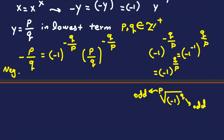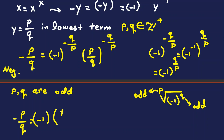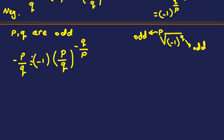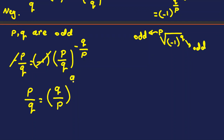So both p and q are odd. With q odd, (−1)^q = −1, making (−1)^(q/p) = −1 (odd index of a negative number). The two negatives cancel, leaving: p/q = (q/p)^(q/p). Raising both sides to the power p: (p/q)^p = (q/p)^q.